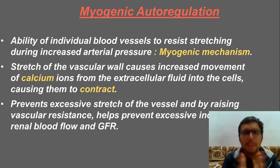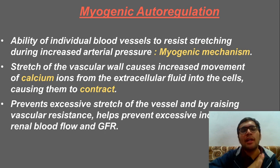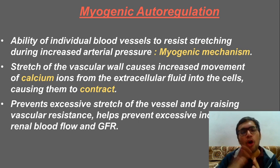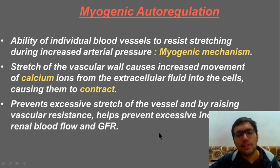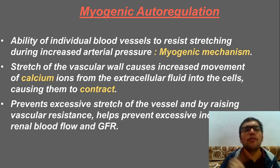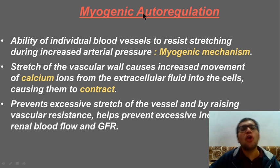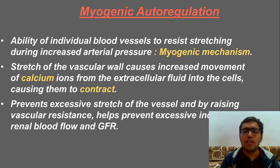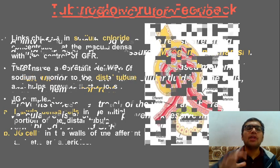The vessel that was stretching now contracts — resistance has been increased. No matter how much blood you keep giving, it will resist those changes, automatically preventing excessive stretch of the vessel. It raises vascular resistance because now it is contracted, and this prevents increase in renal blood flow and GFR. This is known as myogenic autoregulation.